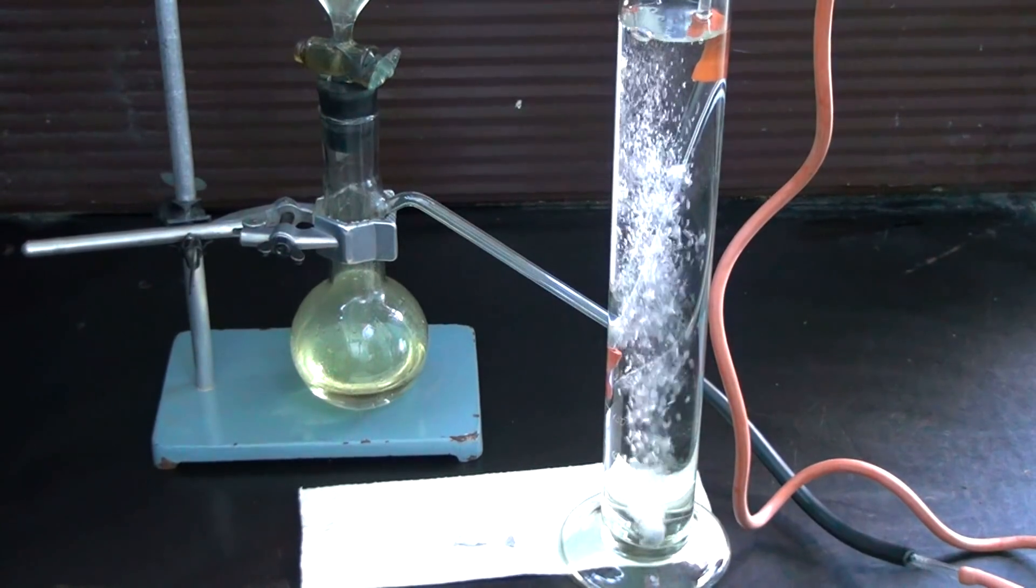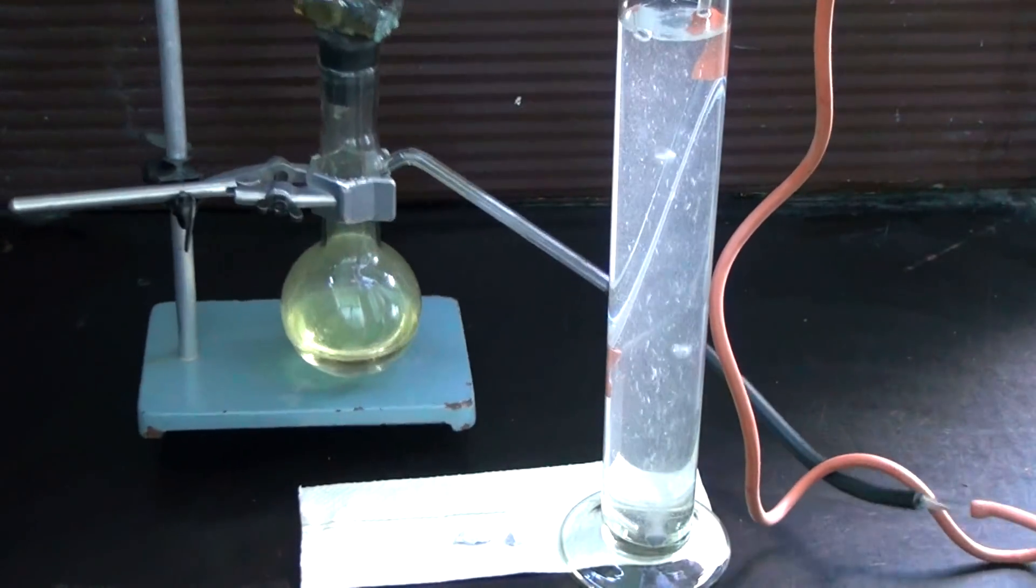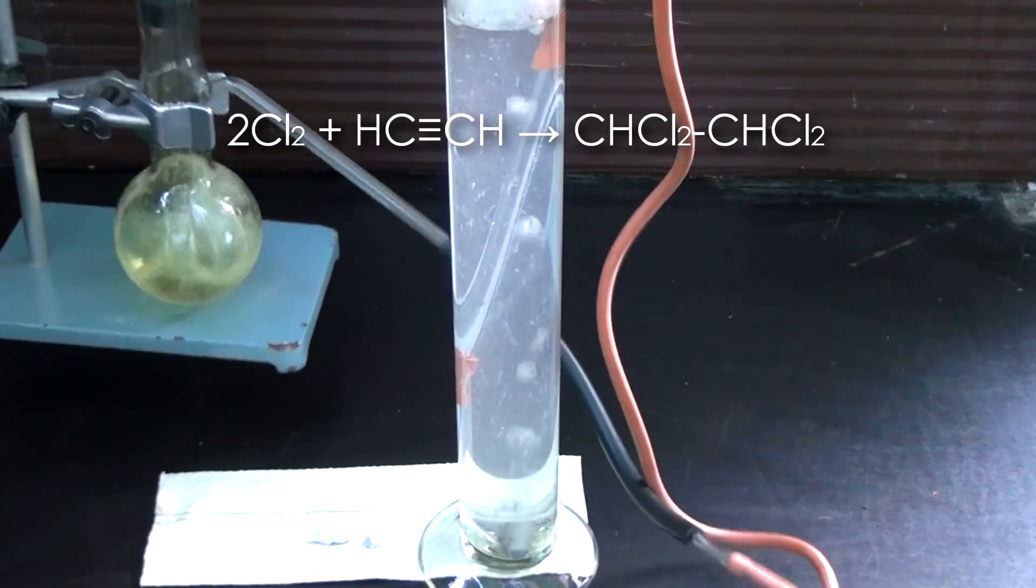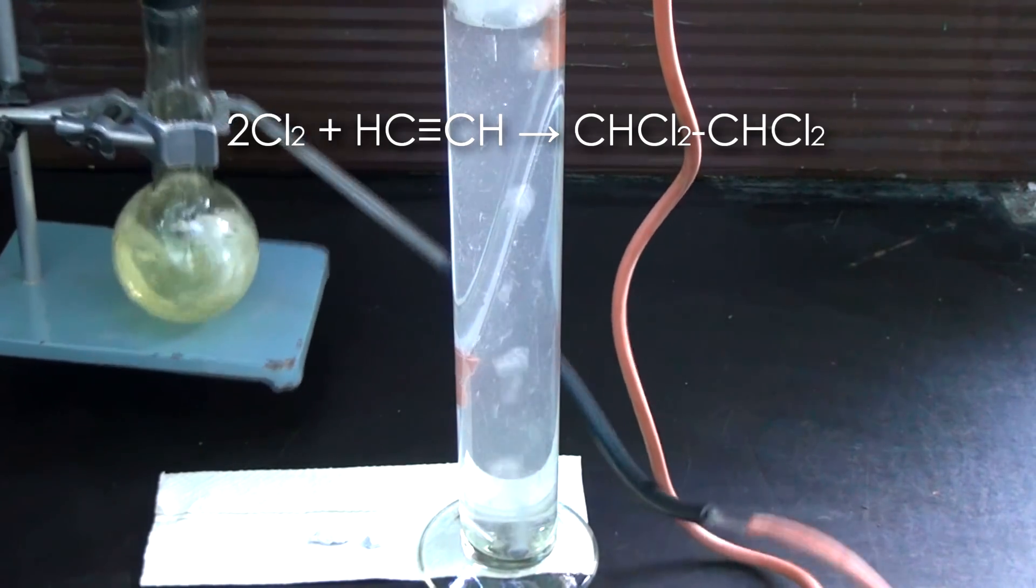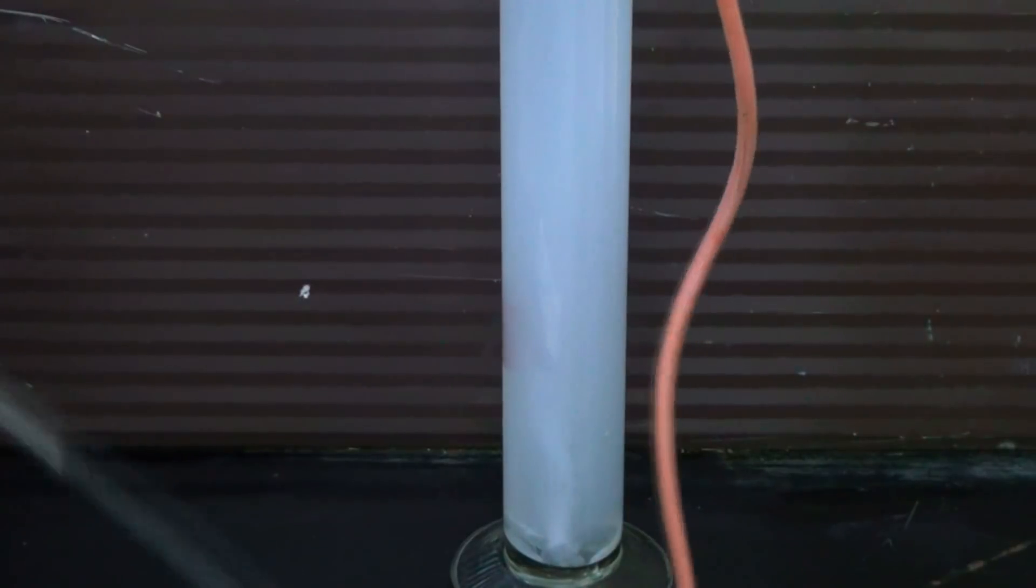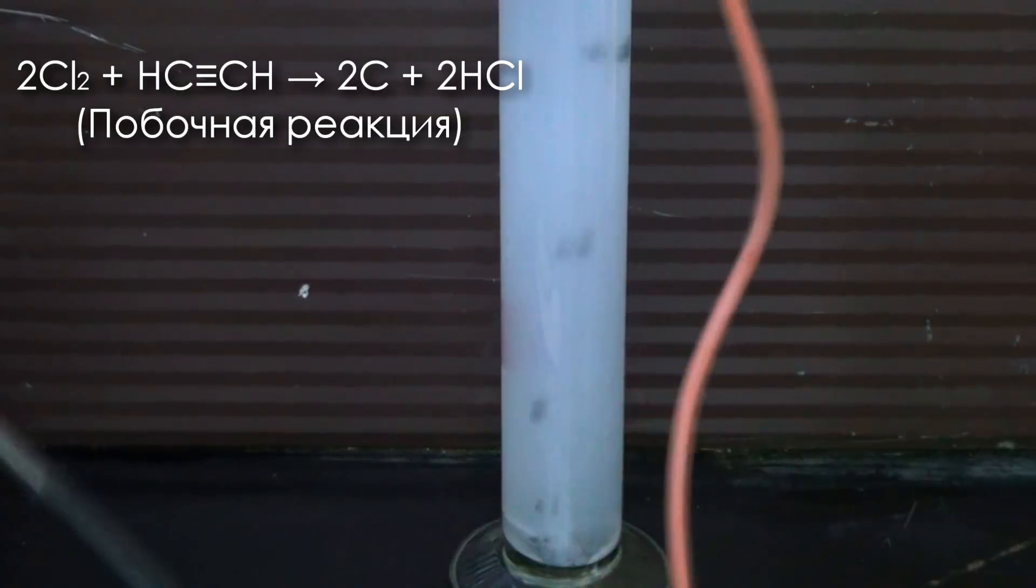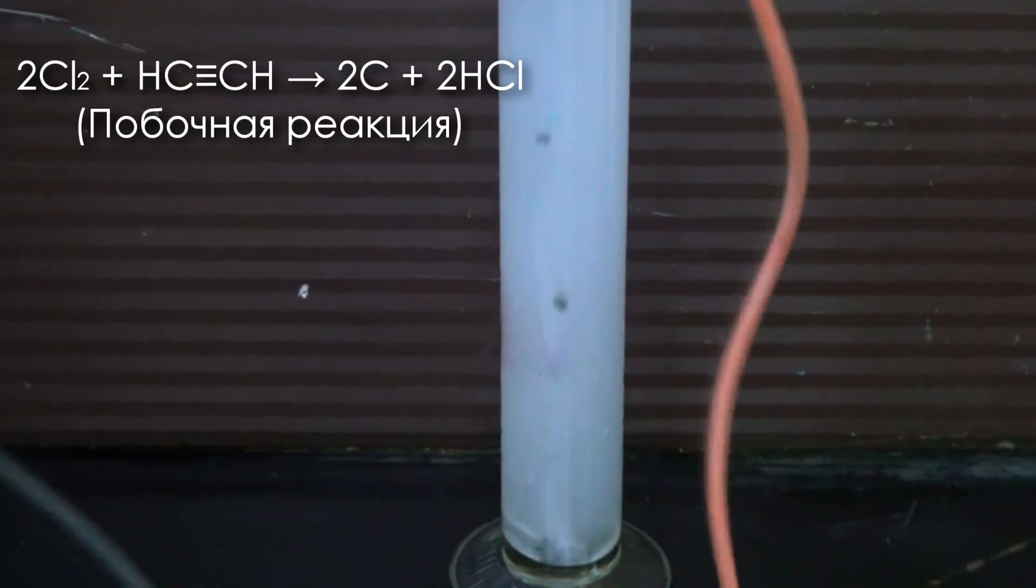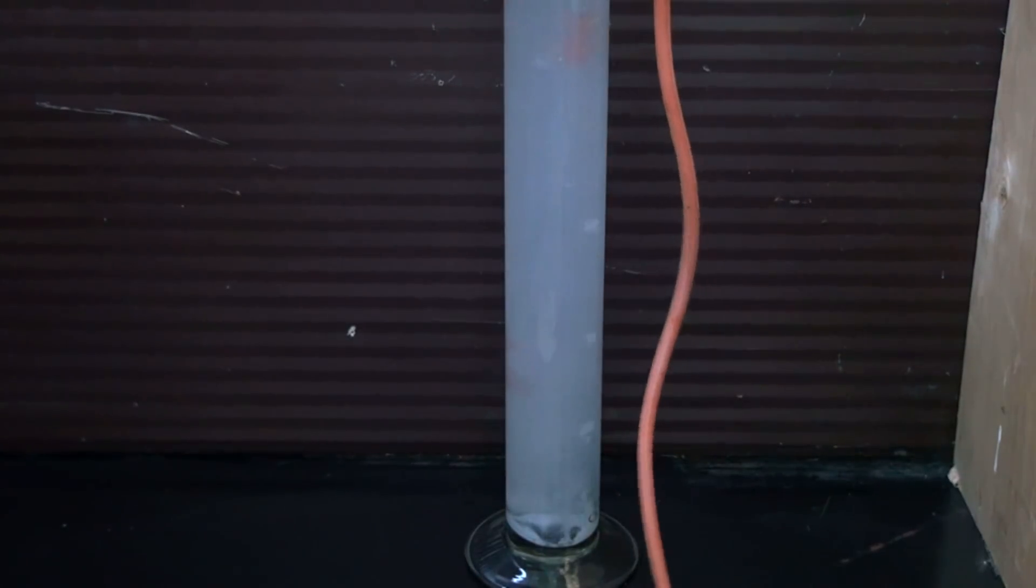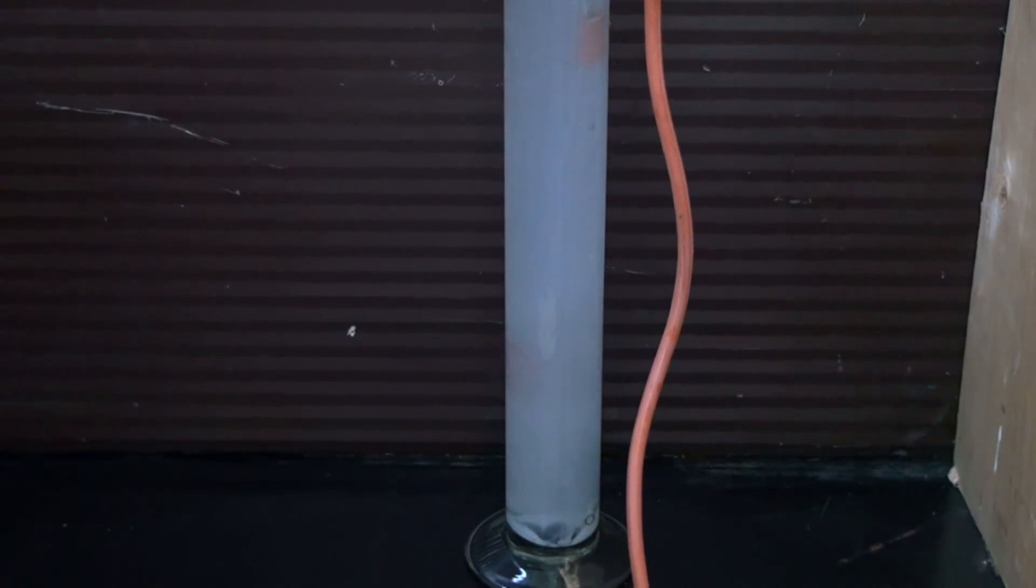Also, if you throw calcium carbide into a cylinder filled with water and then start letting chlorine into this vessel, you can observe an interesting effect, the burning of acetylene with chlorine underwater. Chlorine can react at room temperature with acetylene, forming carbon and hydrogen chloride, as well as a series of intermediate halogen derivatives of acetylene.